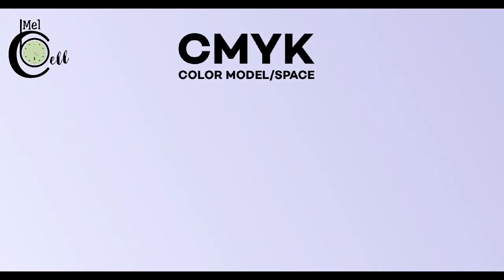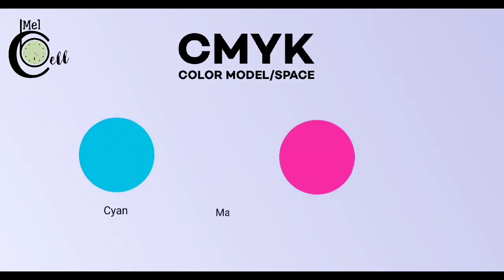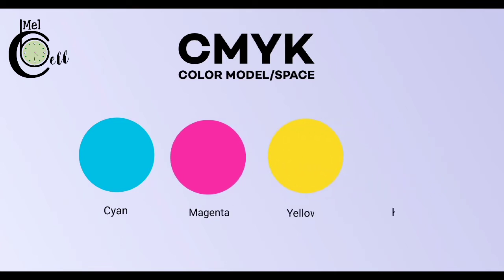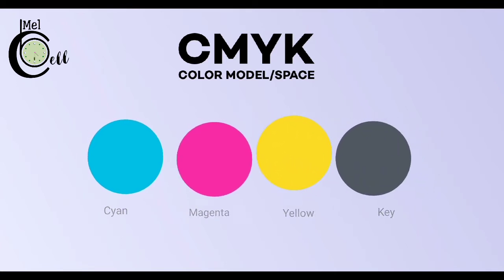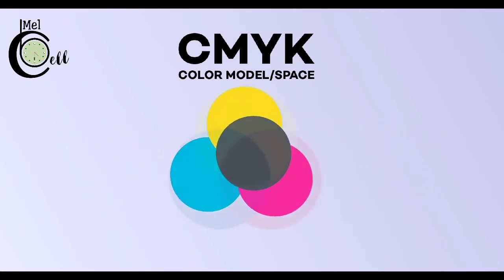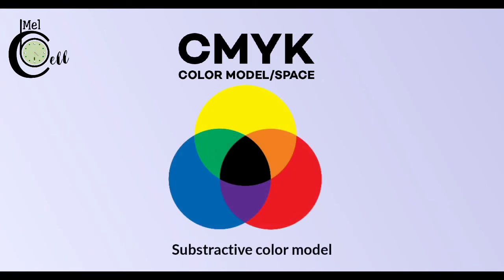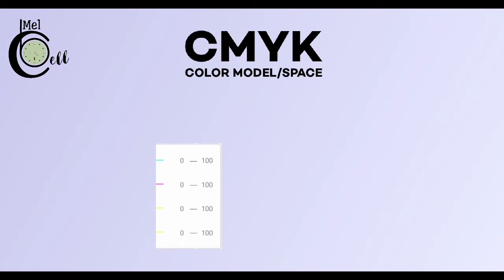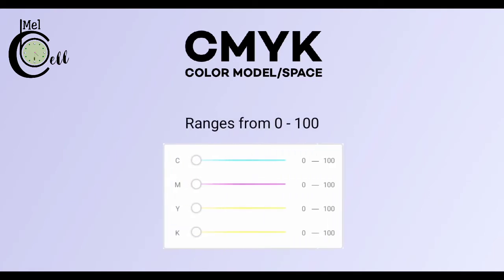CMYK Color Model stands for Cyan, Magenta, Yellow, and Key. It's a subtractive color model, as mixed primaries make black. The numeric value of this color model ranges from 0 to 100.